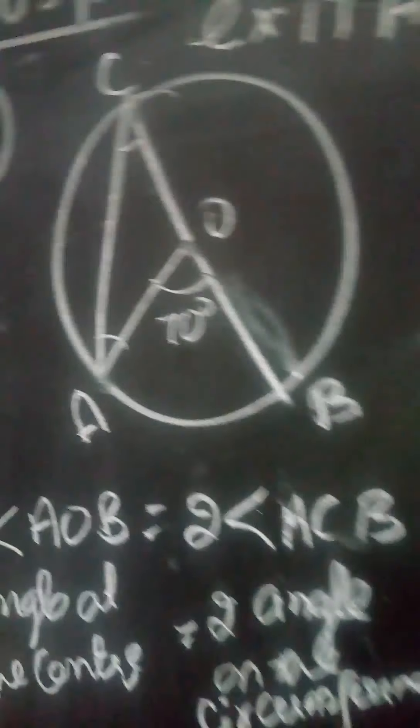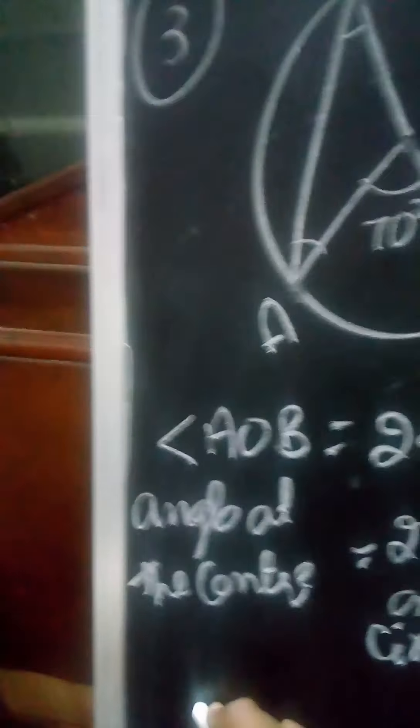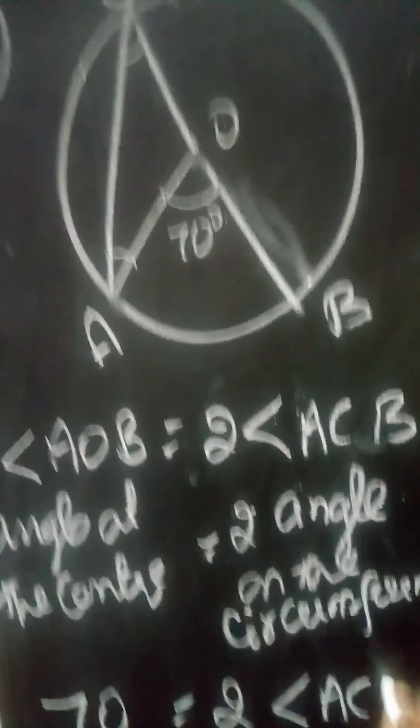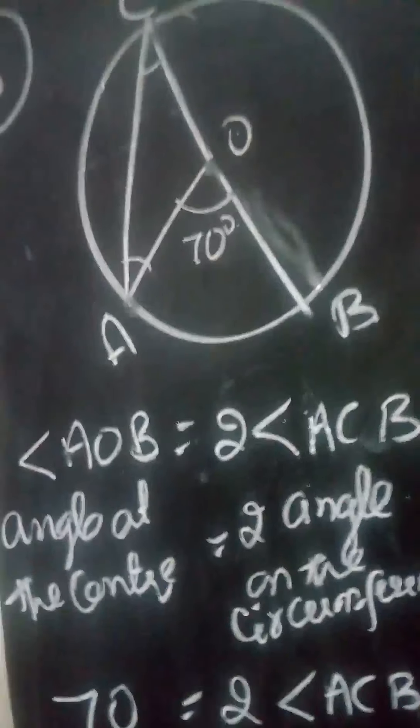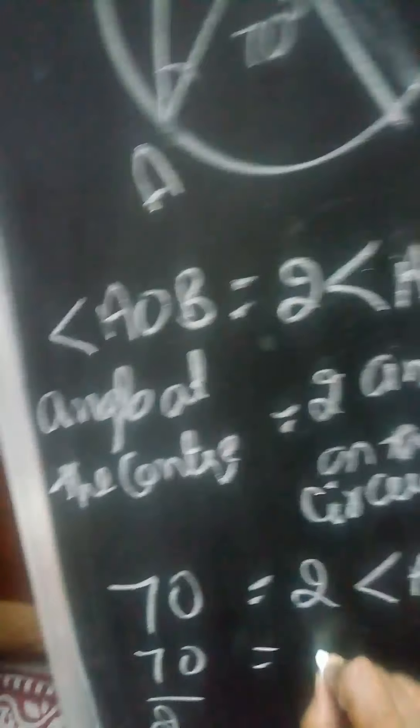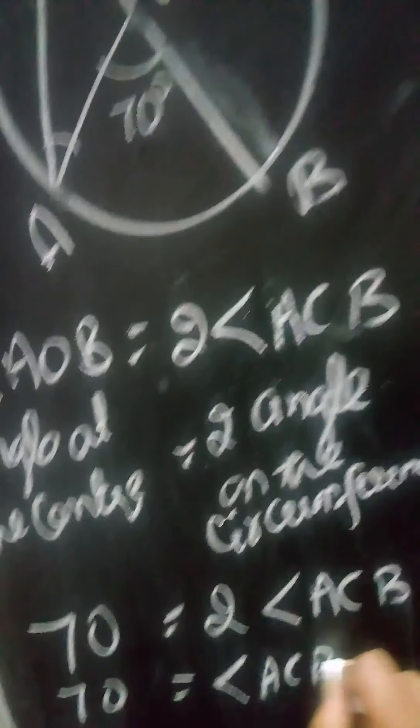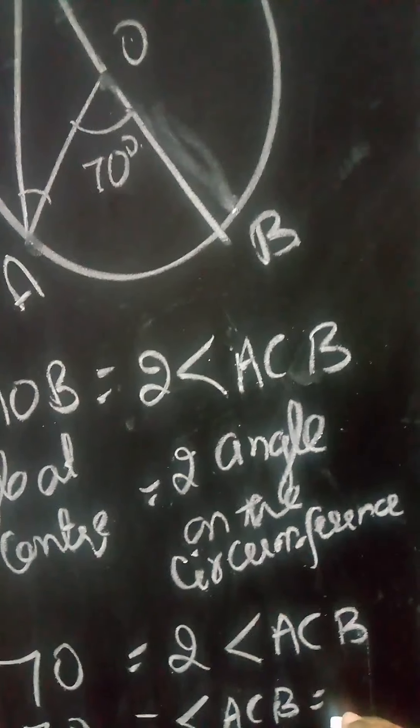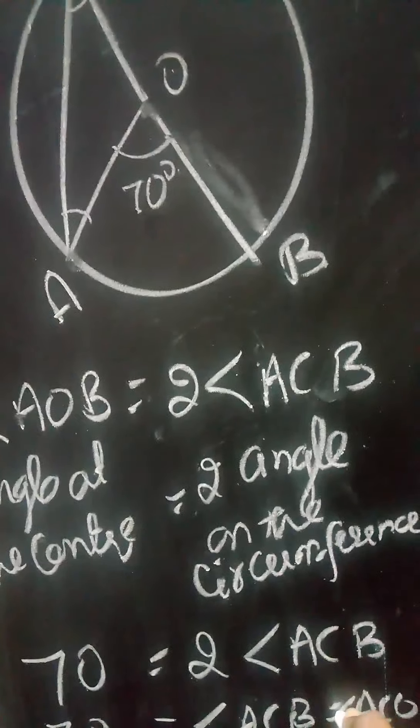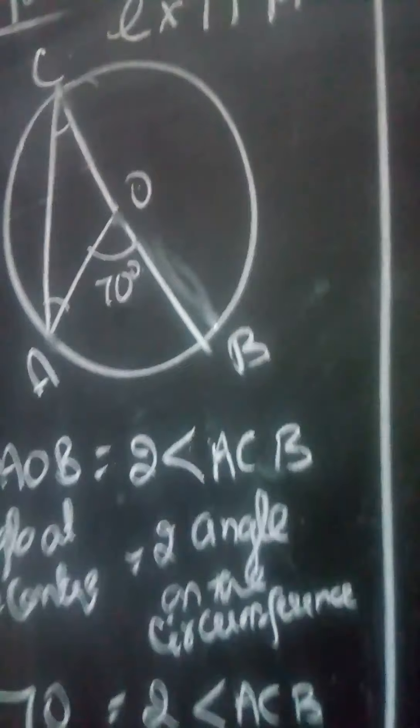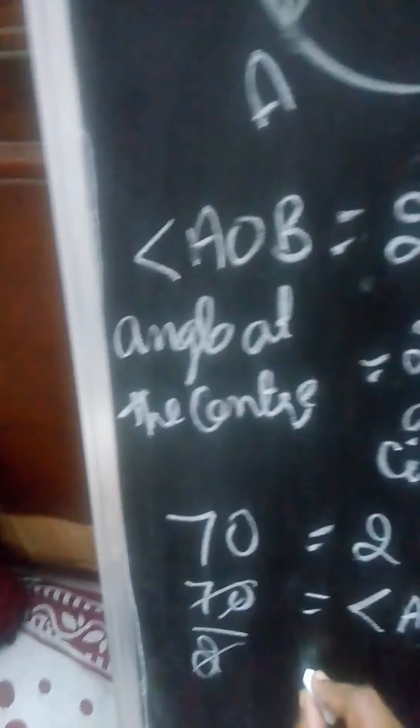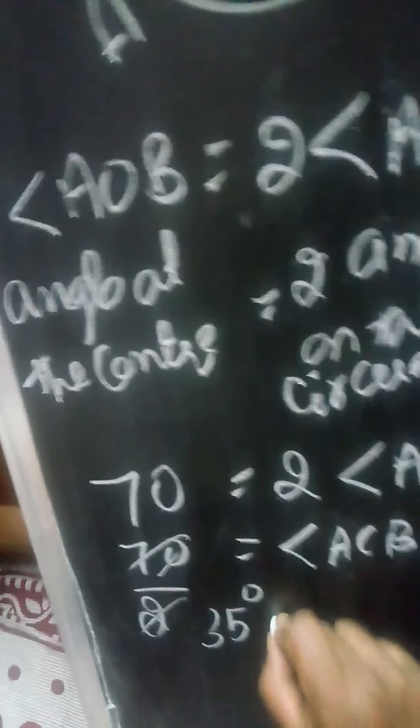Now AOB is 70, so 70 equals two times angle ACB. This equals 70 by 2. Angle ACO equals angle ACO - it's one and the same because it's on the same arc. So this will be 35, meaning 35 degrees equals angle ACO.